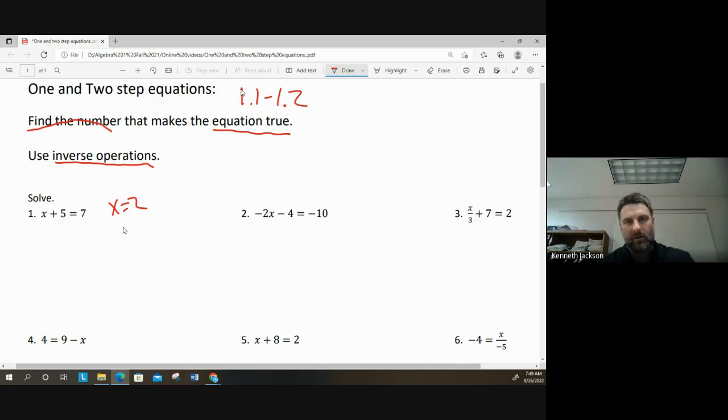Well, not all the equations are going to be as simple as you can just look at it and know the answer. So what we want to use are inverse operations to solve. What I mean by that is this plus 5 is on the same side as the x and I want to get x on a side by itself. So I want my equation at the end to read x equals. And to get rid of a plus 5, I do the inverse or the opposite. The inverse of plus 5 is minus 5. Whatever I do on one side of the equation, I do on the other. And of course, 7 minus 5 is 2. 2 is the number that makes the equation true.